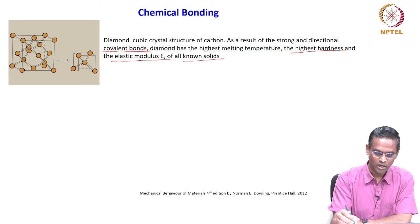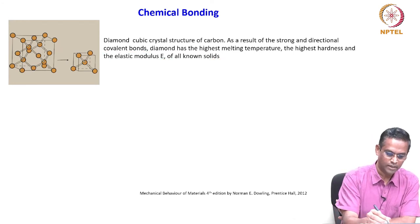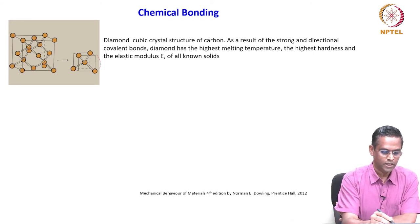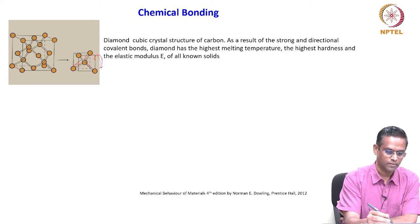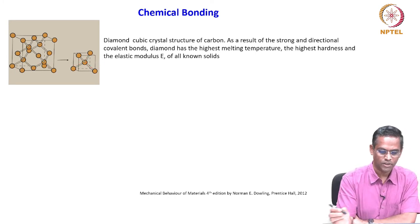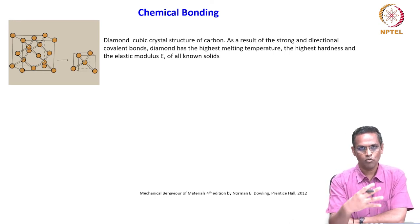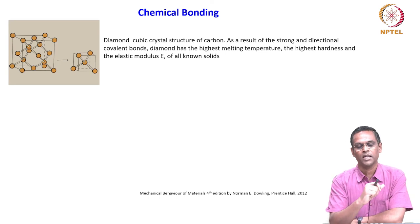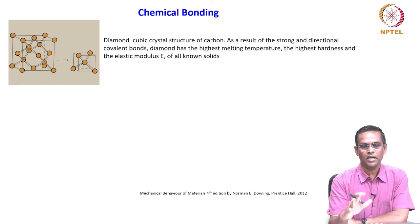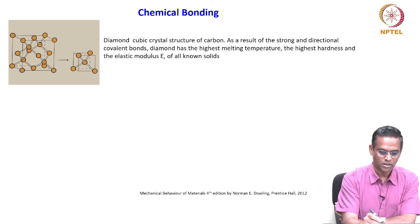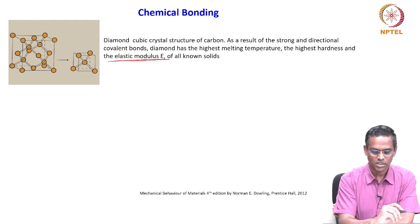If you have a uniform covalent bond with neighbors — for example, in the diamond structure, each carbon has a tetragonal unit with covalent bonds in all directions — that is why they are very strong. A material which exhibits this kind of directional covalent bond uniform with its neighbor generally exhibits high melting point, high hardness, and high elastic modulus.